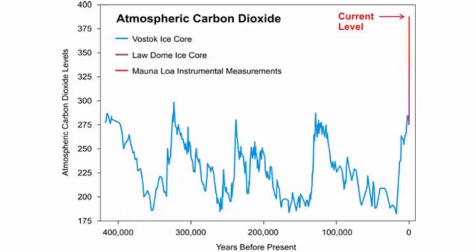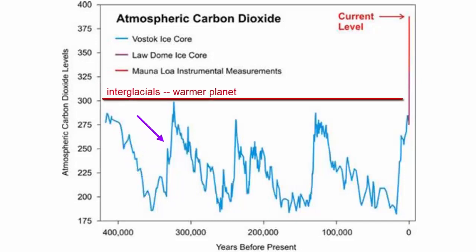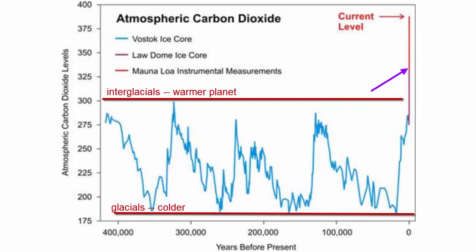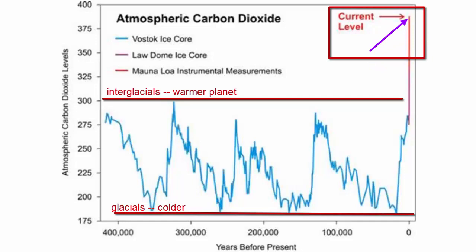This next graph shows atmospheric carbon dioxide levels over the past half a million years, during which there have been a number of ice ages. The high points on this graph represent the interglacials, when the global temperature was at its warmest. The low points show the glacial periods, when as much as 30% of Earth's land surface was covered by glaciers. This graph is useful for showing the recent increase in carbon dioxide and how it compares to Earth's recent past.